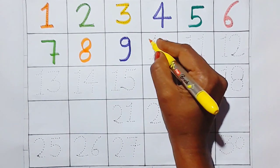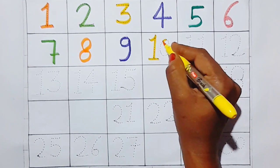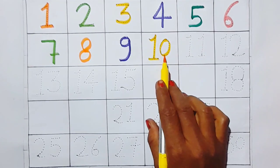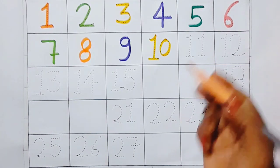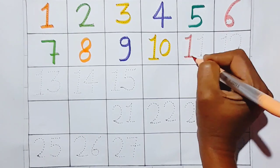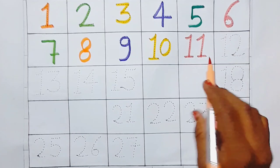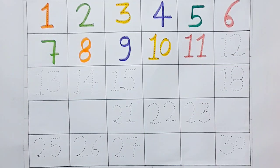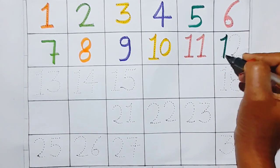Ten — this is ten. Yare bacho. Eleven — this is eleven. Twelve — this is twelve.